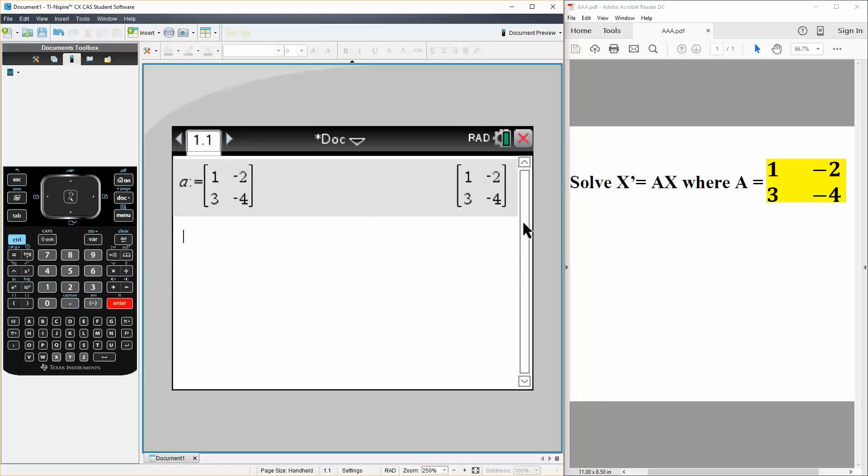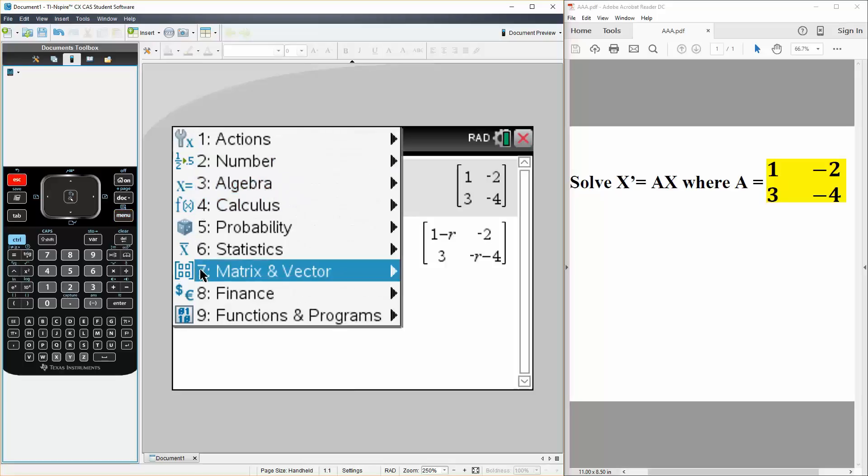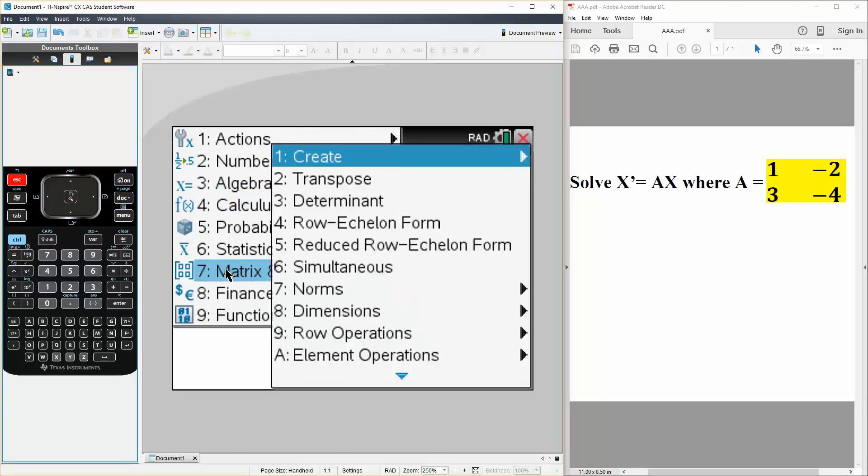And next we will do A minus R, and by doing that, it automatically does it correctly, where just 1 minus R and negative 4 minus R. It keeps these two the same, which it should. And next we're going to get the determinant, so we hit menu 7, matrix and vectors, we go to 3 for determinant.